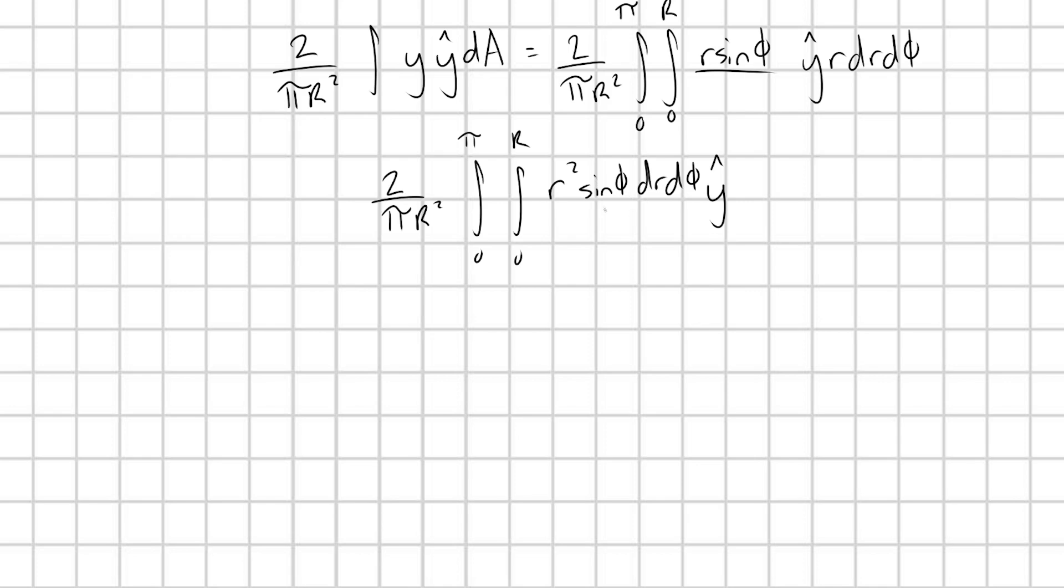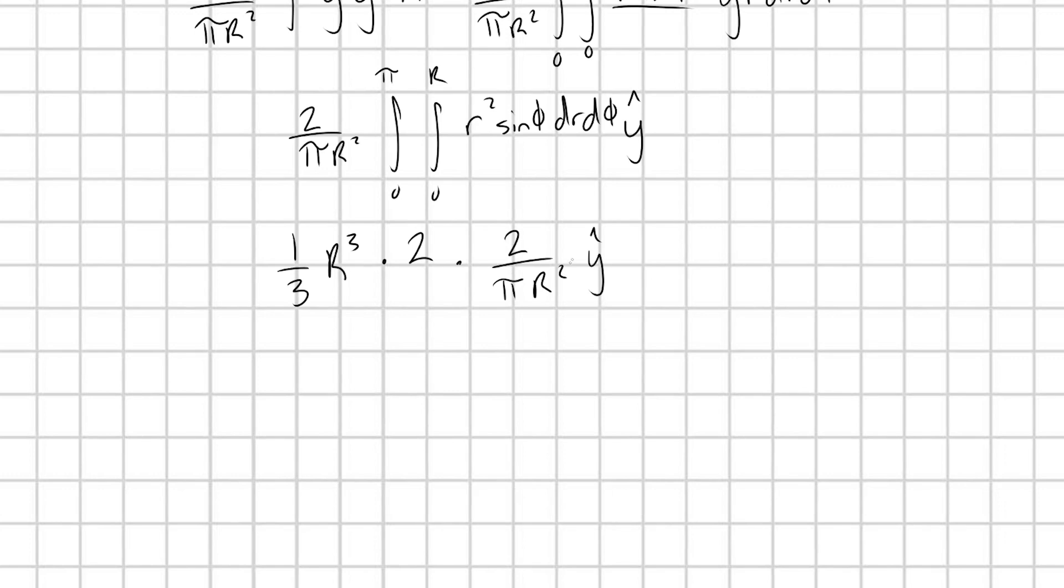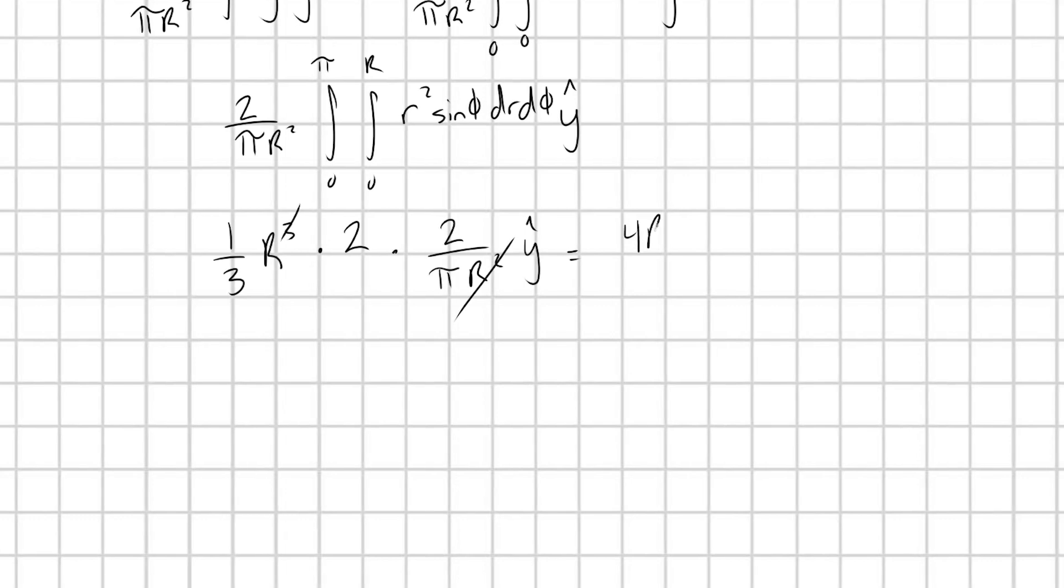What's our integral with respect to r going to give us? Really easy integral. That's going to give us one third r cubed. What's our integral with respect to phi going to give us? Well, integral of sine phi is going to give us minus cosine phi. And when we plug in our boundaries from zero to pi, that's really easy to do. It just ends up giving us an extra factor of two. Great. And so now we just multiply this by our constant term, two over pi R squared. And so we're going to just have some quick cancellation, just like that. And when we multiply everything out, we're going to be left with four R over three pi in the y hat direction. This is our full expression for our half disk's center of mass.